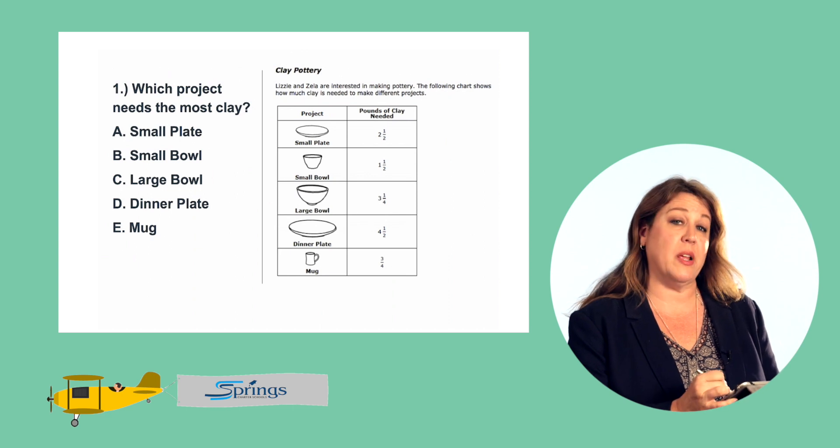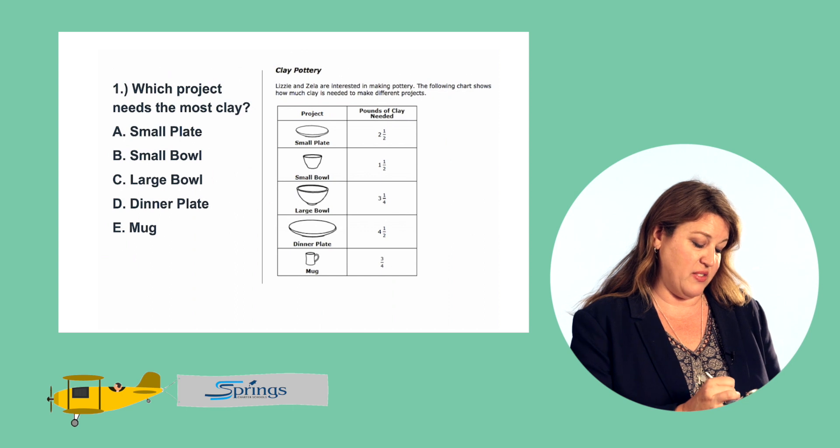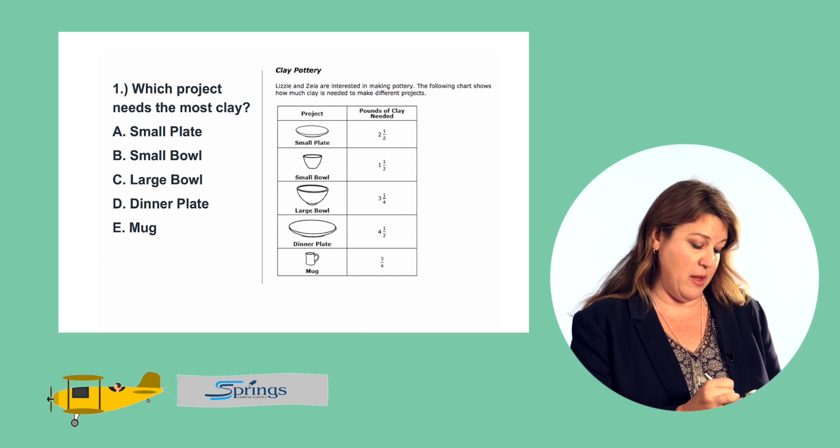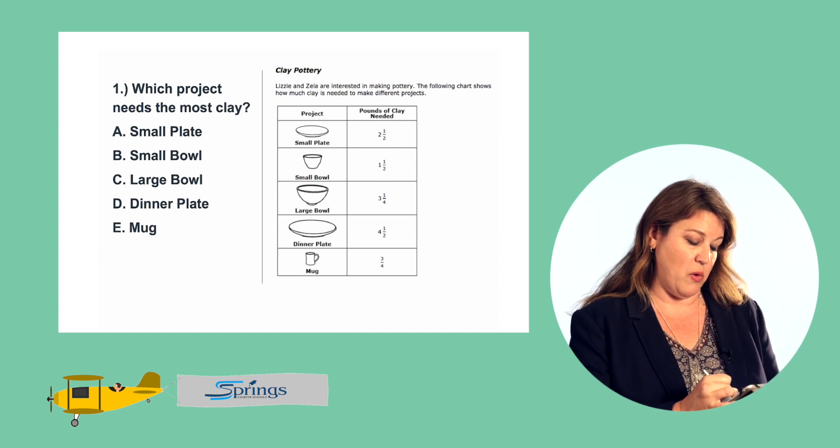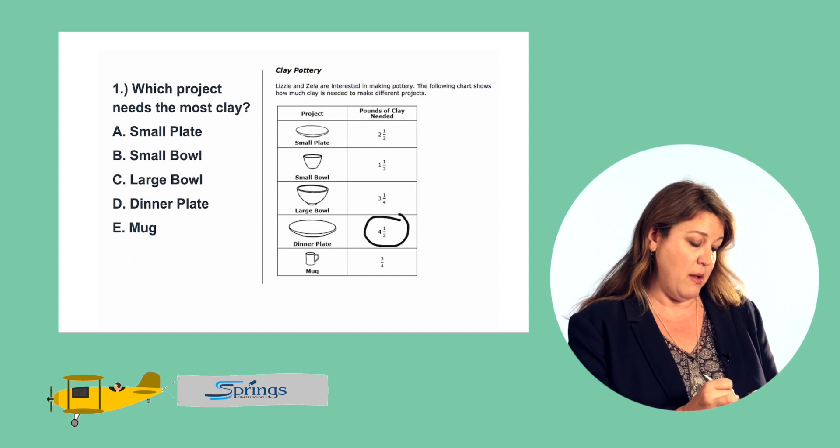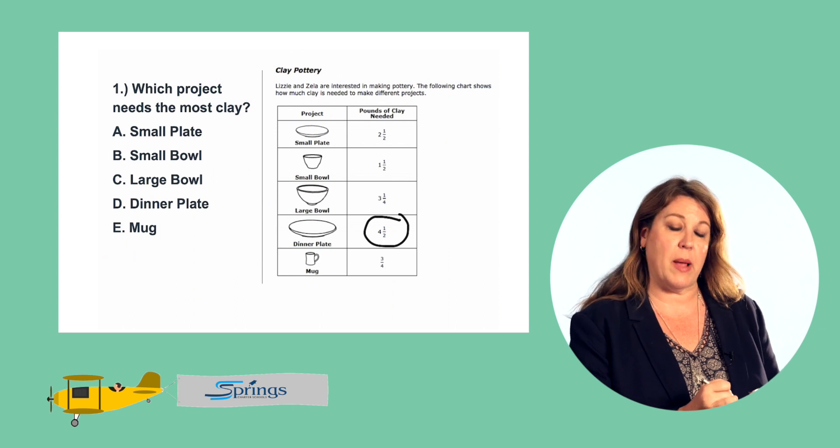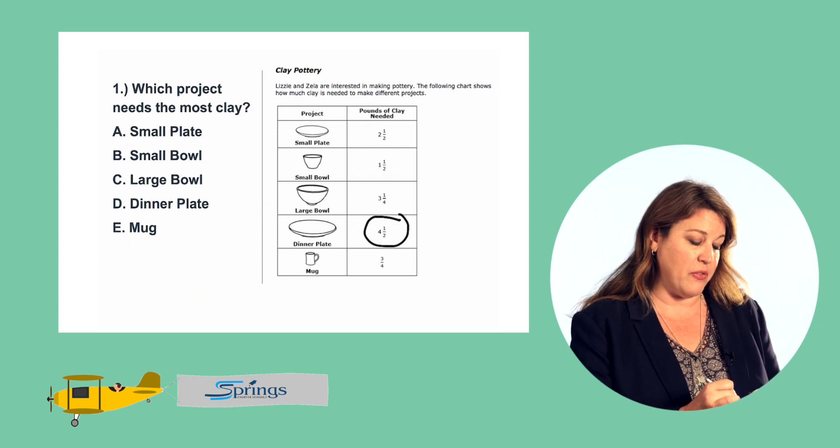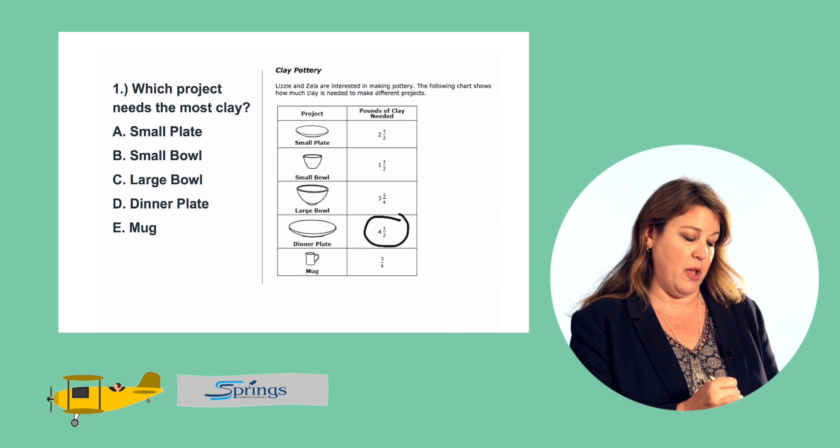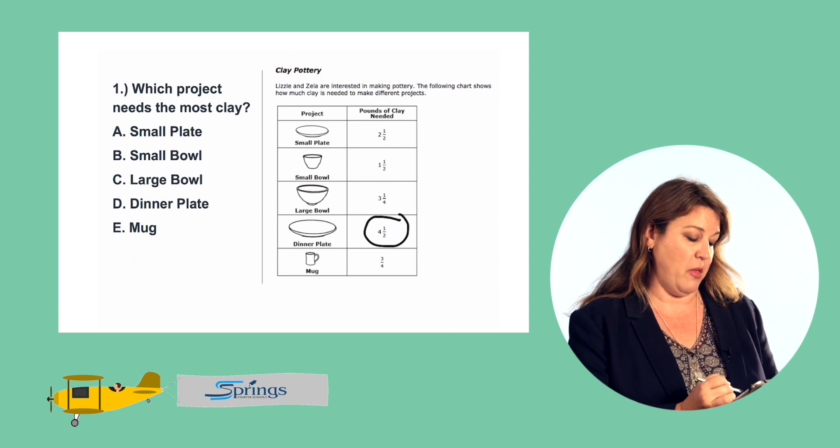Large bowl is three and one-fourths, so that takes even more. The dinner plate takes four and a half pounds of clay, and the mug only takes three-fourths. I can tell here just by looking at the whole number four that the dinner plate is going to take the most amount of clay. It takes four and a half pounds of clay because four and a half is larger than all of the other mixed numbers for all the other projects.